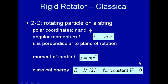Another useful model system to consider in quantum mechanics is the so-called rigid rotator. Like we've done for the harmonic oscillator, we're first going to consider the classical physics of rigid rotators, and then we're going to translate what we know from classical mechanics into quantum mechanics.